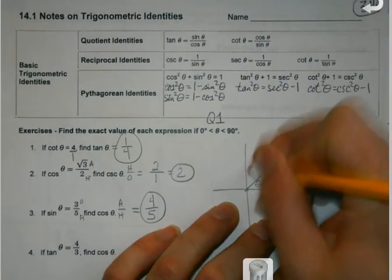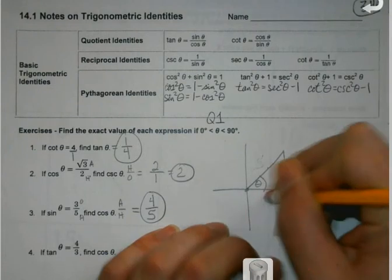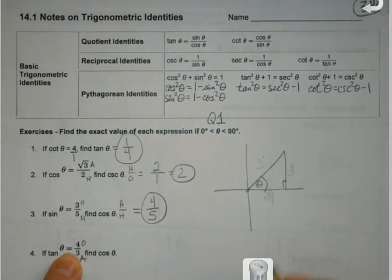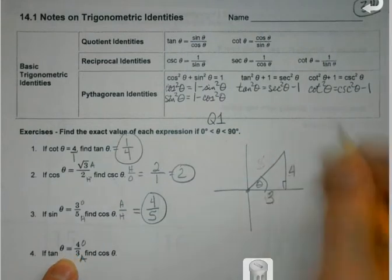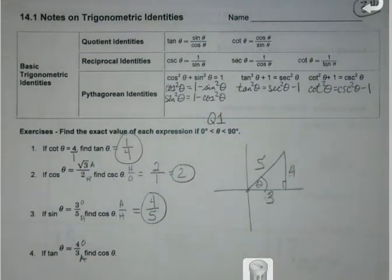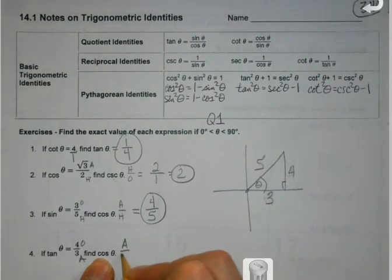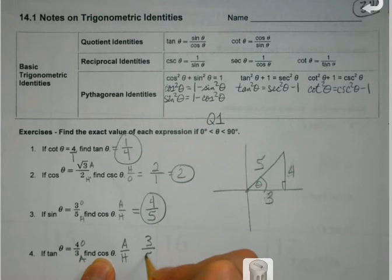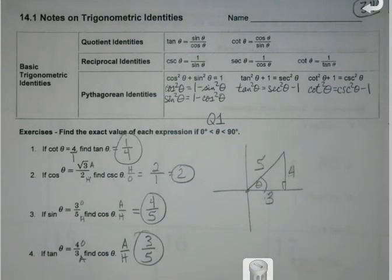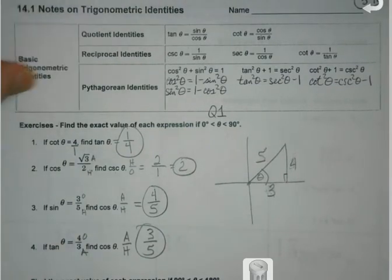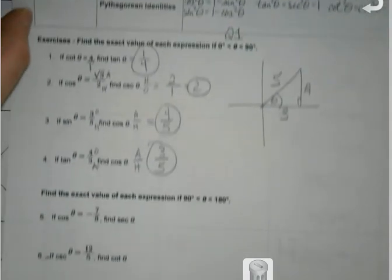One more time with these. Tangent opposite over adjacent. Find the cosine, which is adjacent over hypotenuse. All positive, because they're all in quadrant 1. So it still is going to let me find those exact values. Nothing fancy. Just some Pythagorean theorem stuff.